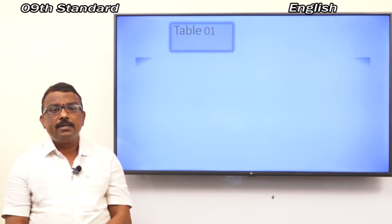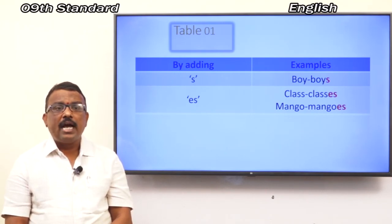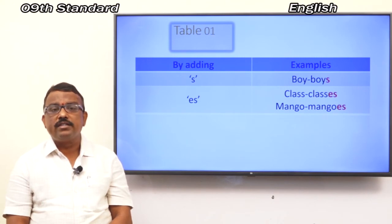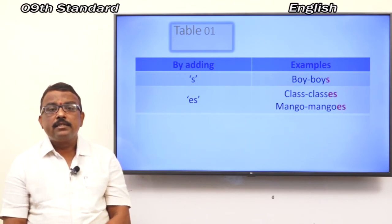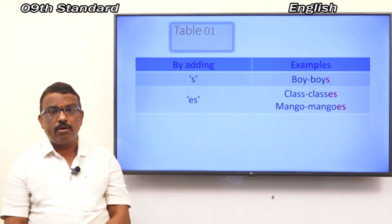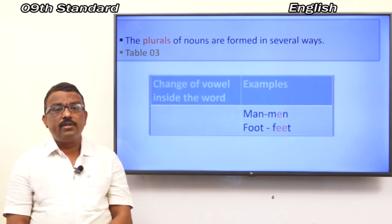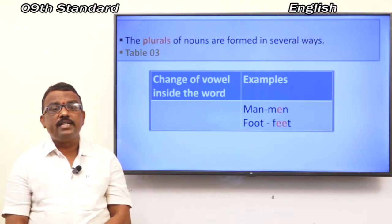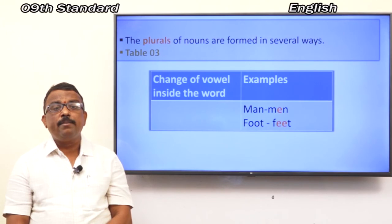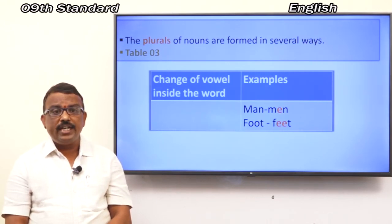Let us discuss the table by looking at examples. By adding '-es': clause → clauses; mango → mangoes. Another rule is the change of the vowel in the middle of the word. Example: man → men; foot → feet.